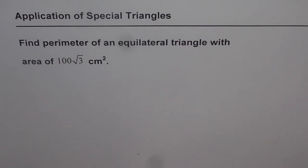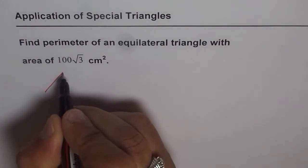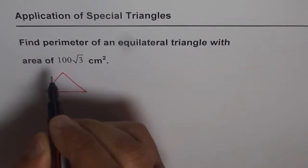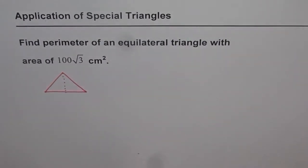We are given the area of an equilateral triangle and we need to find the perimeter. So let's sketch it first and then we will figure out how to solve this problem. Let us say this is our equilateral triangle and let me draw an altitude from the vertex.